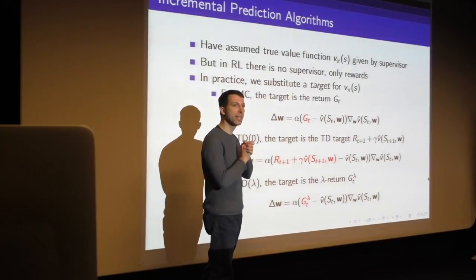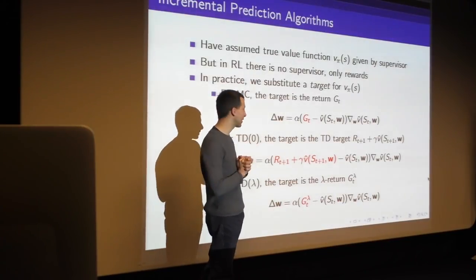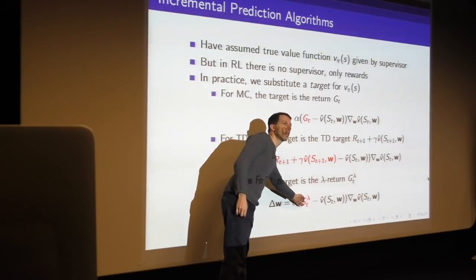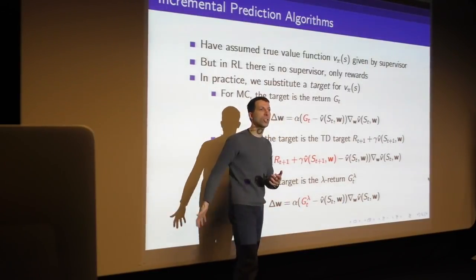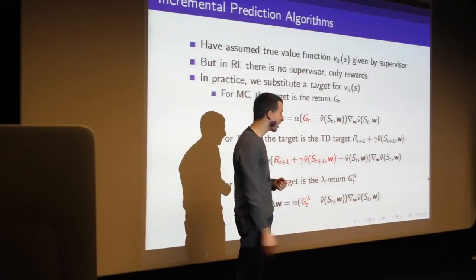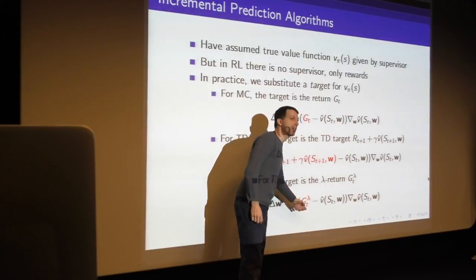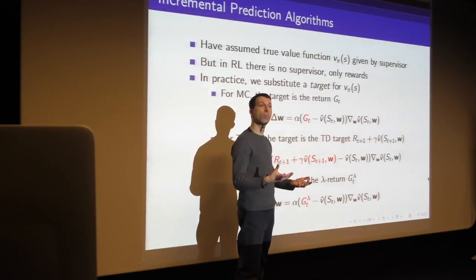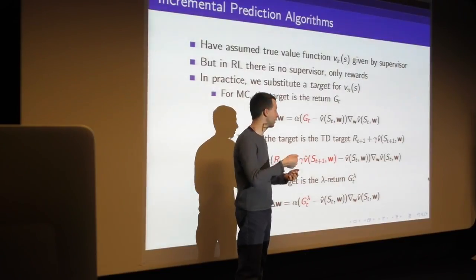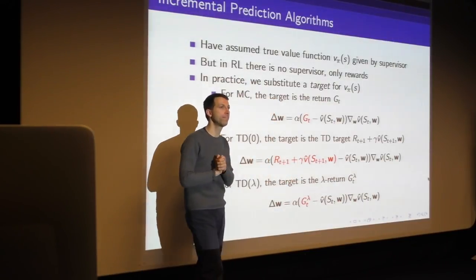We can do the same idea with TD-lambda. We use the lambda return — which interpolates between TD-zero and Monte Carlo — as the target and fit our function approximator to those lambda returns.